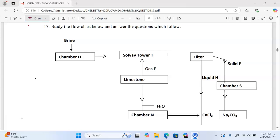We have brine getting into chamber D, then straight to the Solvay tower where gas F is coming in. Allow me to start the flowchart from where we have limestone, which is calcium carbonate. Calcium carbonate is usually heated in the kiln, where it decomposes into calcium oxide and carbon dioxide gas.